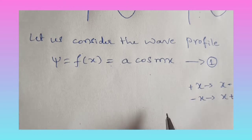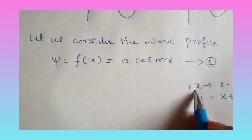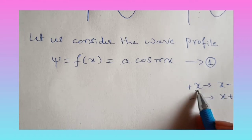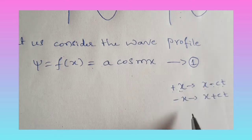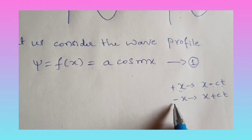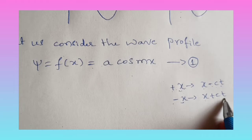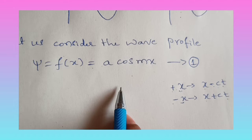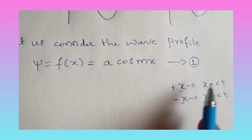One thing we have to remember: whenever the wave travels along the positive x direction with velocity c, at time t, x is replaced by x minus ct. If the wave travels along the negative x direction with velocity c, at time t, x is replaced by x plus ct. Here we are considering the wave is traveling along the positive x direction, so in place of x we have to put x minus ct.